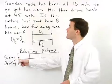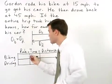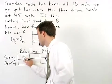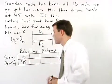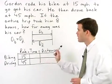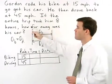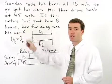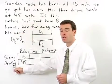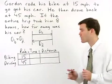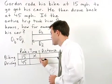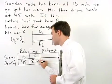Gordon's rate biking is 15 miles per hour. His rate driving is 45 miles per hour. Be careful with the time column. We know that his total time is 8 hours, but we don't know how long he spent biking and how long he spent driving. Since the total is 8 hours, we can represent the parts as x and 8 minus x.